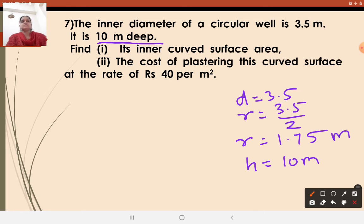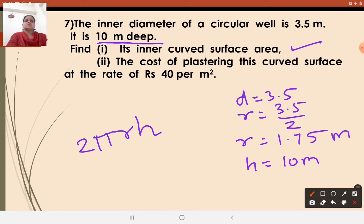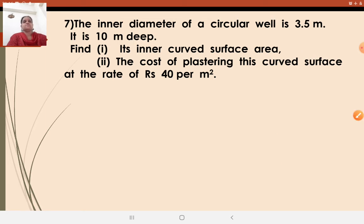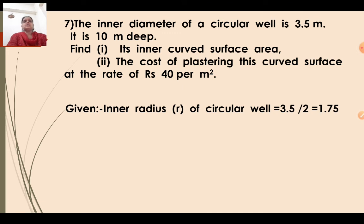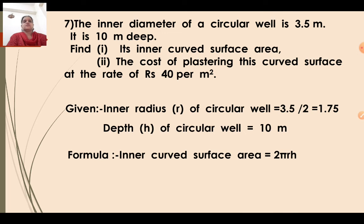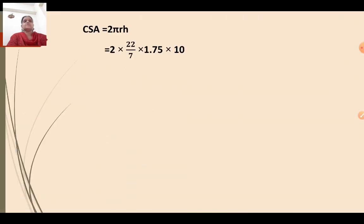Both the values are in meter. We need to find the inner curved surface area. The formula for curved surface area is 2πRH. Given: inner radius R equals 1.75 meter, depth H equals 10 meter. Substitute the values: curved surface area equals 2 into 22/7 into 1.75 into 10. Do the cancellation — 7 cancels with 1.75.